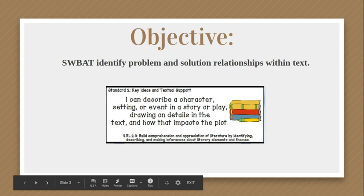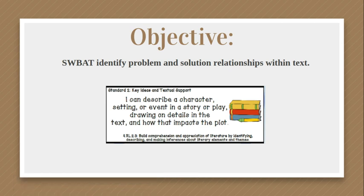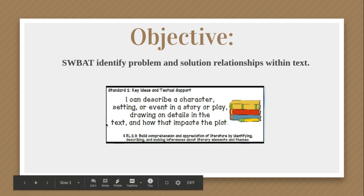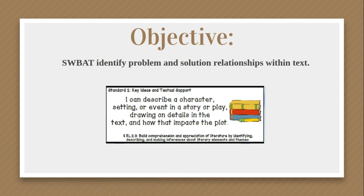For this lesson, the objective says students will be able to identify Problem and Solution relationships within text. That goes along with one of our state standards that says students should be able to describe a character, setting, or event in a story or play, drawing on details in the text and how that impacts the plot.